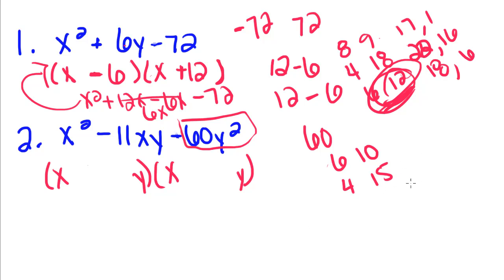So 15 minus 4 gives you 11. And since my 11 is negative, that means the 15 is going to have to be negative. So minus 15 plus 4. If we foiled this back out, we get x squared plus 4xy minus 15xy minus 60y squared.